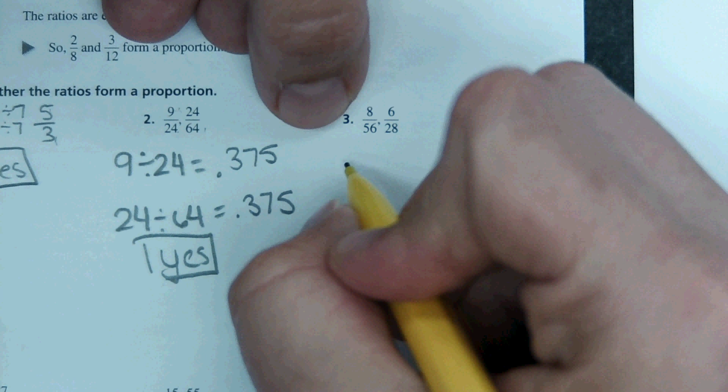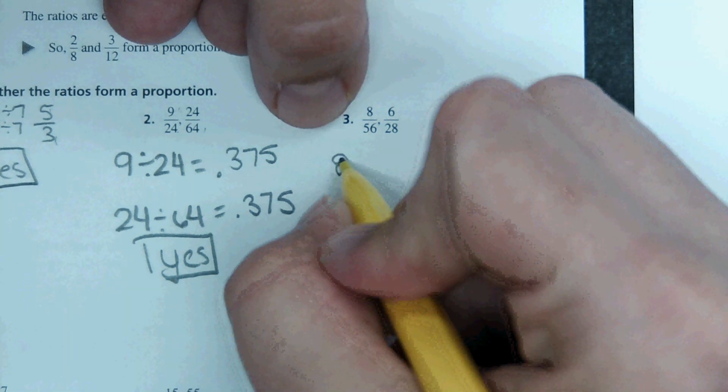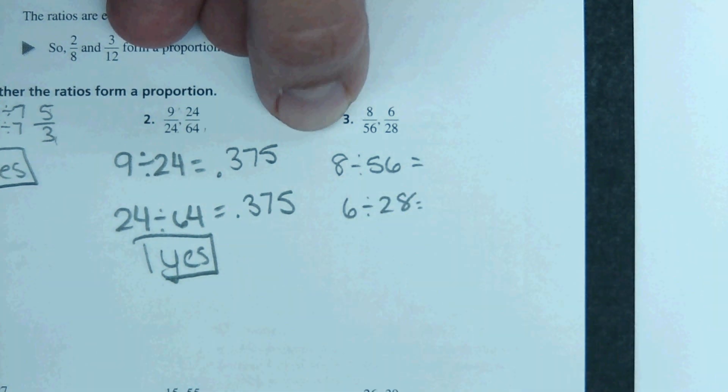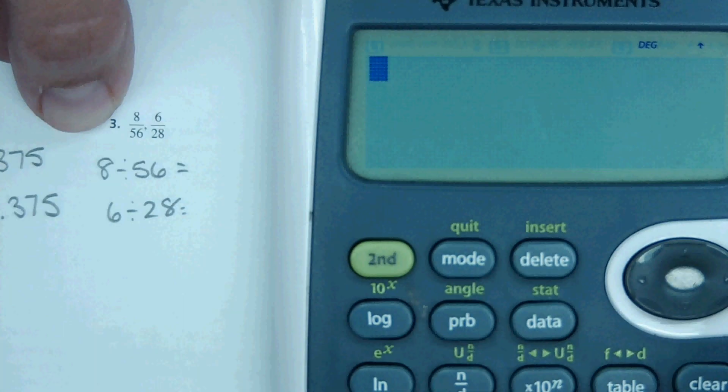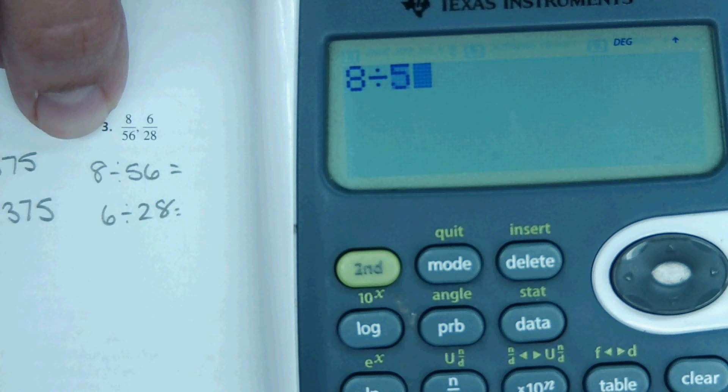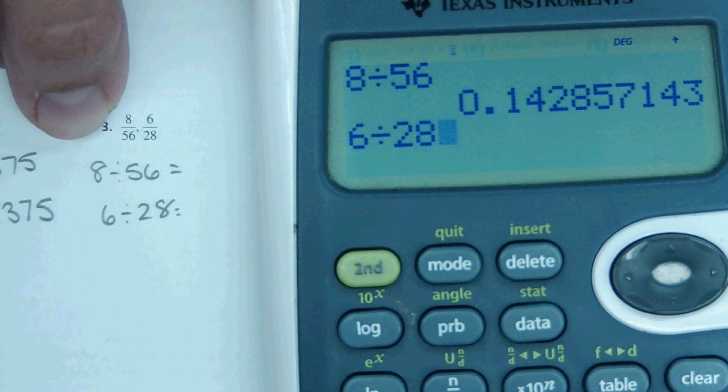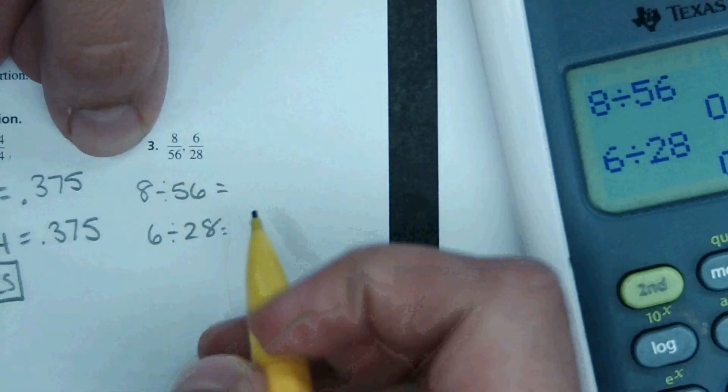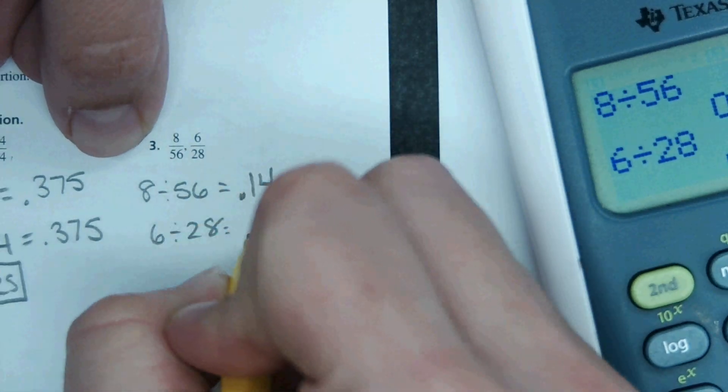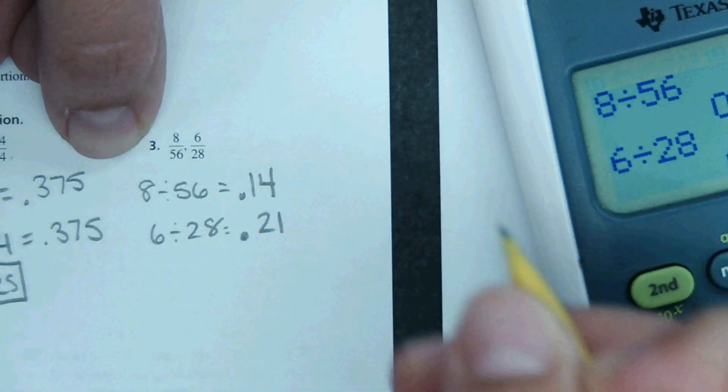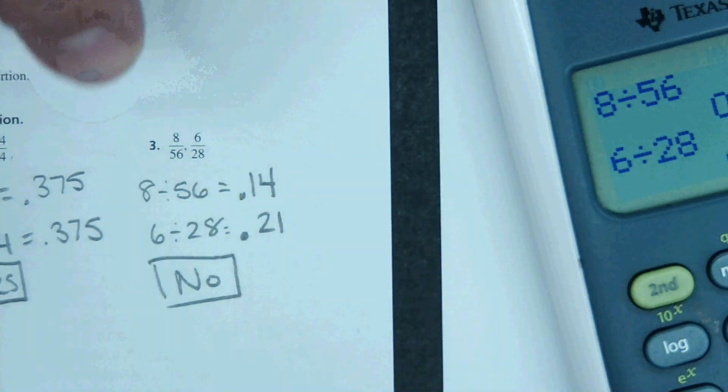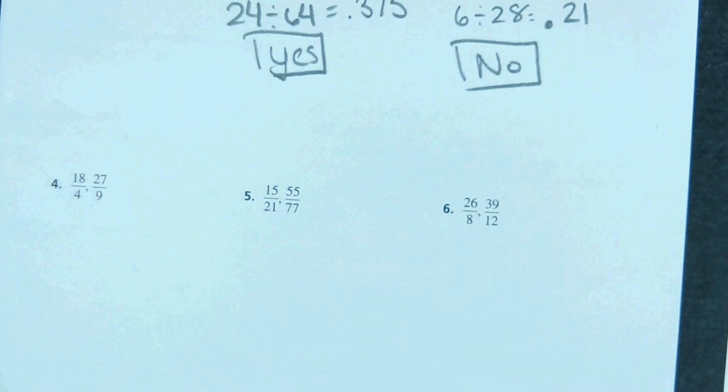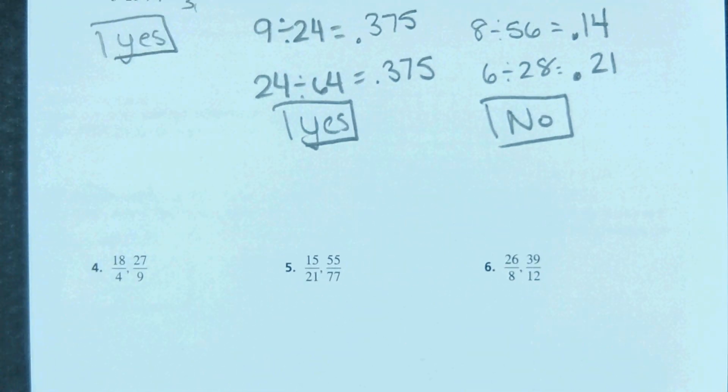So then for number three, same thing. We're going to do 8 divided by 56 and 6 divided by 28 to see if we get the same decimal. So in the calculator, 8 divided by 56 and 6 divided by 28. Okay, these come out to two different decimals. So that means these are not proportional. This came out to 0.14, this came out to about 0.21. So no, these ratios are not proportional.